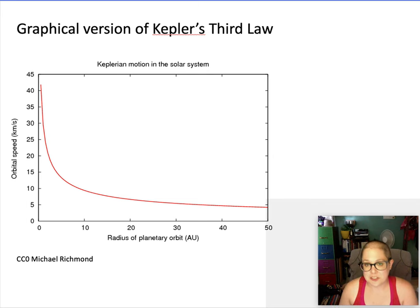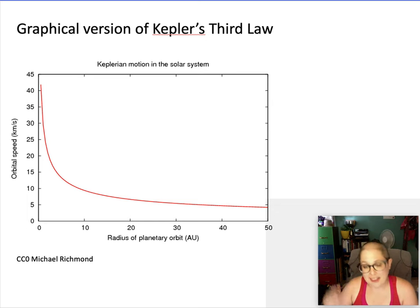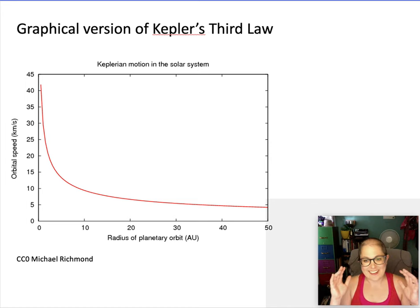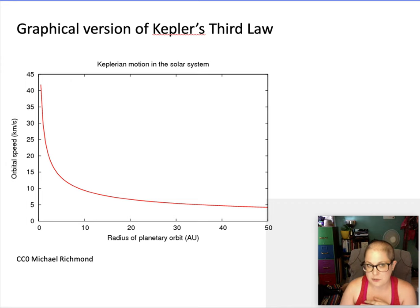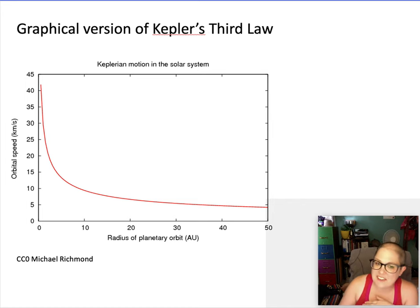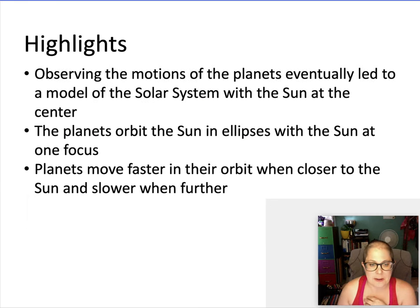That specific relationship also tells you that planets are actually moving faster the closer they are to the sun — it's not just that the path is shorter, the velocity itself is actually faster. On a graph with orbit size on the x-axis and speed on the y-axis, as the orbit gets bigger the speed drops. For example, at 1 AU — where Earth is — the orbital speed is about 33 kilometers per second. The planet you're sitting on right now is moving 33 kilometers every second, though we don't feel that.